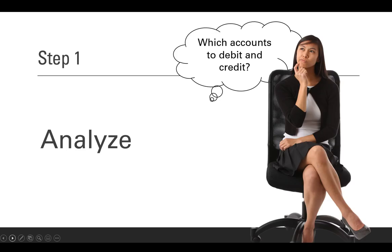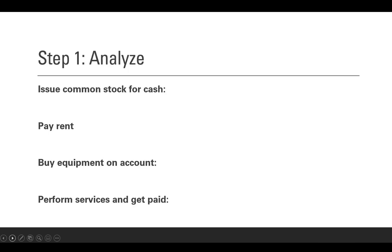So first thing we do, we analyze. Analyzing means you're going to decide what accounts have to be debited and credited. This is the place where some decision-making has to be made. In some cases in real life in a company, a lot of this is automated and the computer knows, but still in many cases there are decisions being made. So let's take a look at how this works.